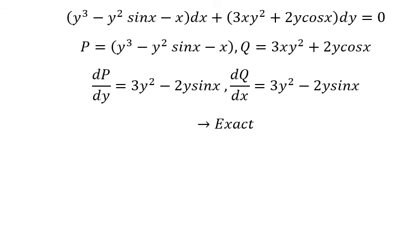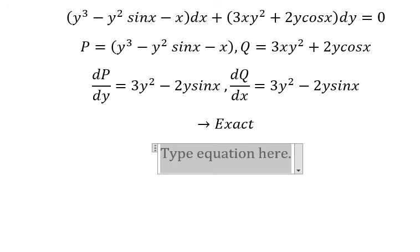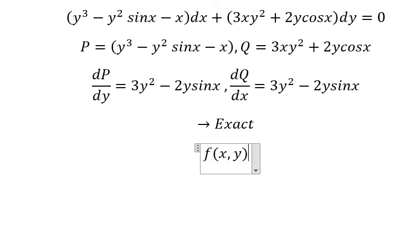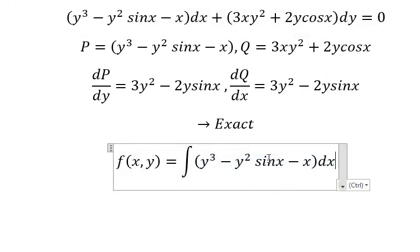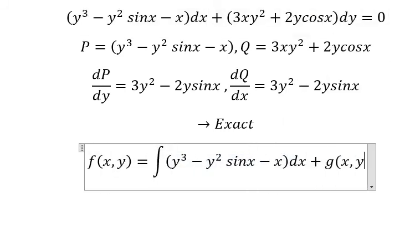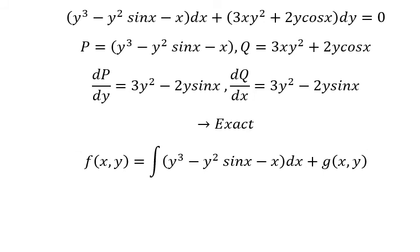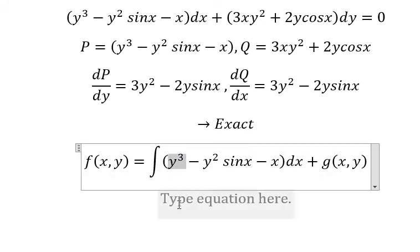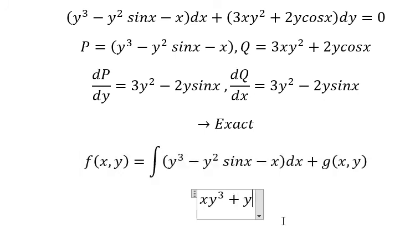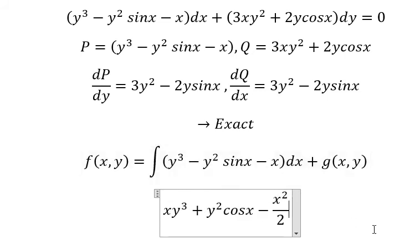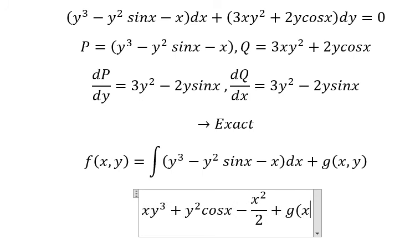Now I need to set up the function f(x,y) as the integration of P with respect to x, plus g(y). The integration gives us x, and the integration of negative sine x gives us positive cosine x. We also have x squared over two and three xy.